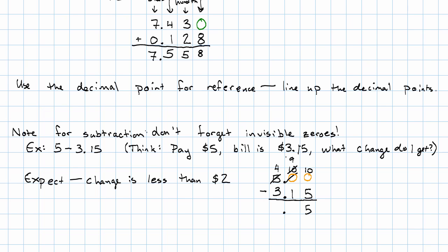10 minus 5 is 5, 9 minus 1 is 8, 4 minus 3 is 1. So 5 minus 3.15 is 1.85. My change is $1.85.